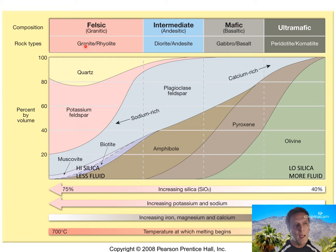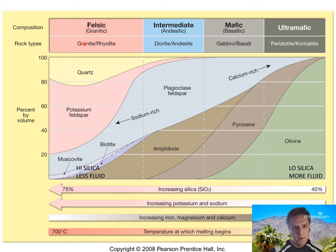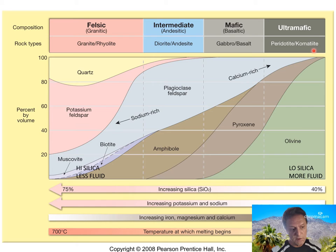Granite is the felsic intrusive rock — it forms and cools below the surface of the Earth. Rhyolite is felsic but extrusive — it cools above the surface as lava, with the same composition as granite. Moving right with less silica: diorite is the intermediate intrusive rock; andesite is its extrusive counterpart. Gabbro is mafic and intrusive; basalt is its extrusive equivalent. Then we have peridotite and komatiite, which occur essentially in the upper mantle and are very rare near the surface.